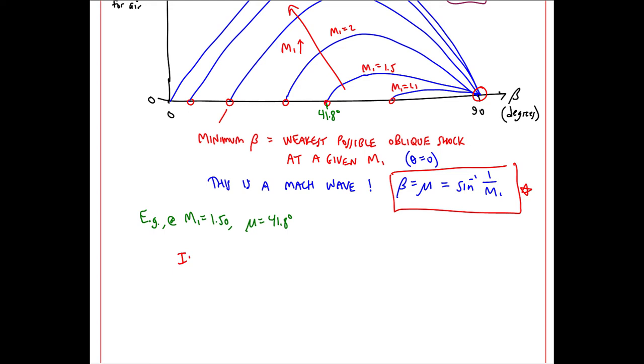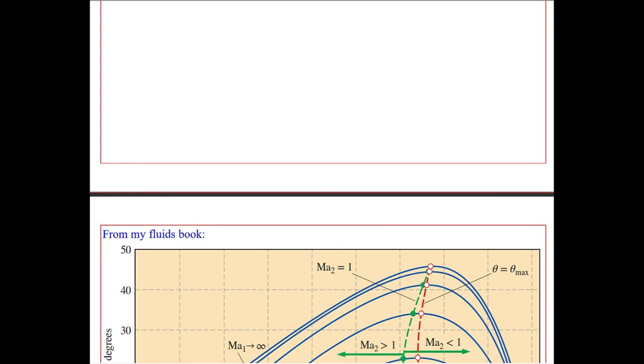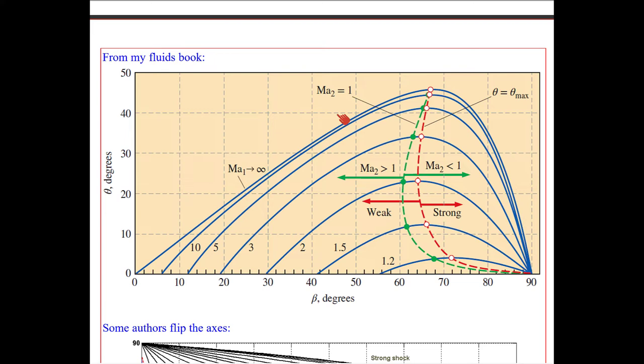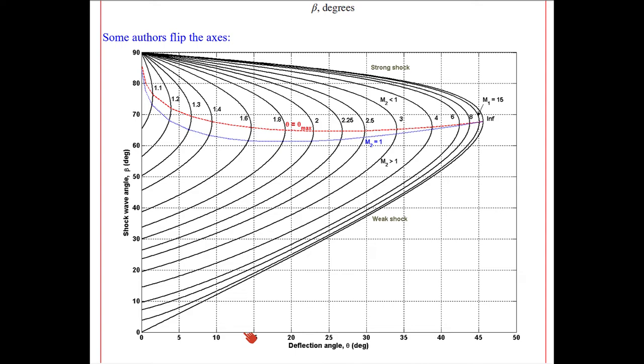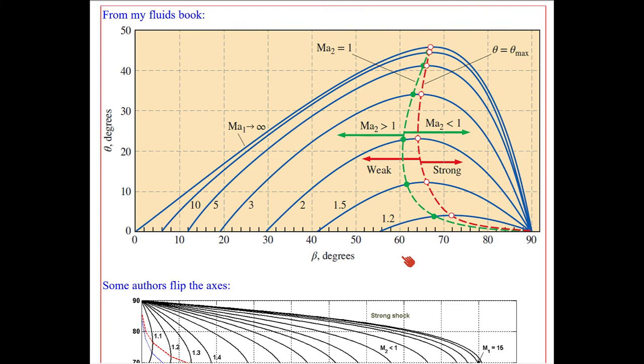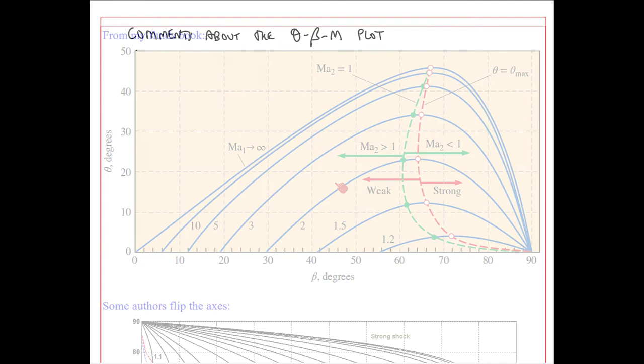I'll make a comment here. We call this beta min, and it is impossible for beta to be smaller than beta min for a given M1 and gamma. Now I'll show a couple nicer images of this figure. This is the figure from my undergraduate textbook. Recall that we use MA instead of M for Mach number. Here's the peak theta of 45.6 degrees, and here's my 41.8 degrees for beta at Mach number 1.5. Some authors like to turn this plot 90 degrees, plotting theta horizontally and beta vertically. It's the same information just with the axes flipped. I prefer plotting it this way, which is the way I did it in the book.